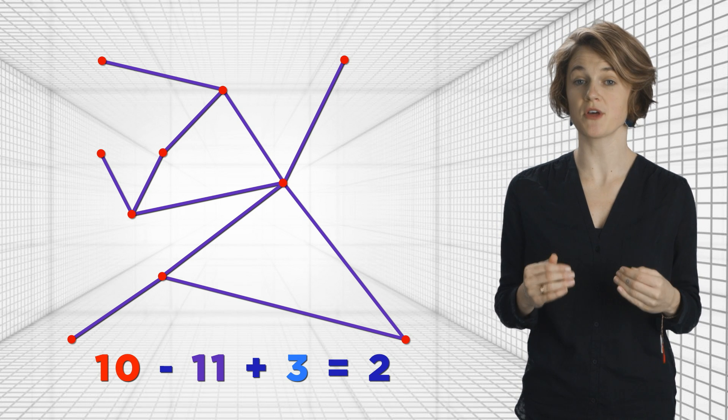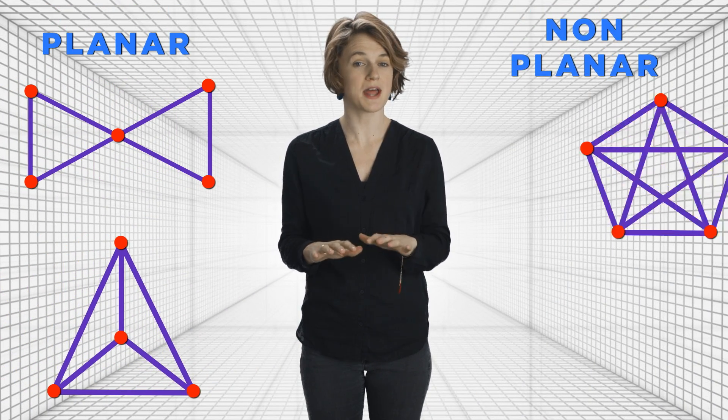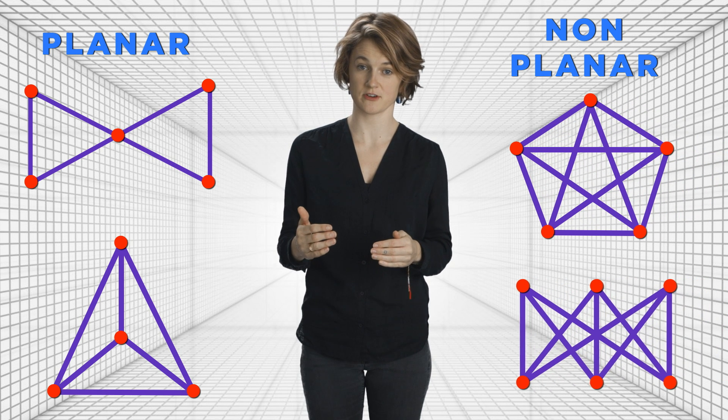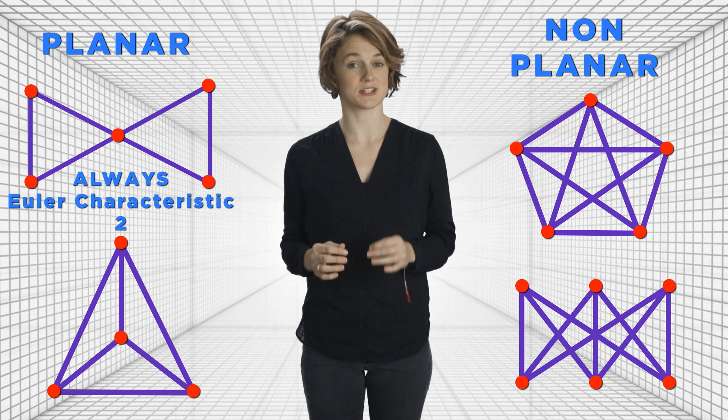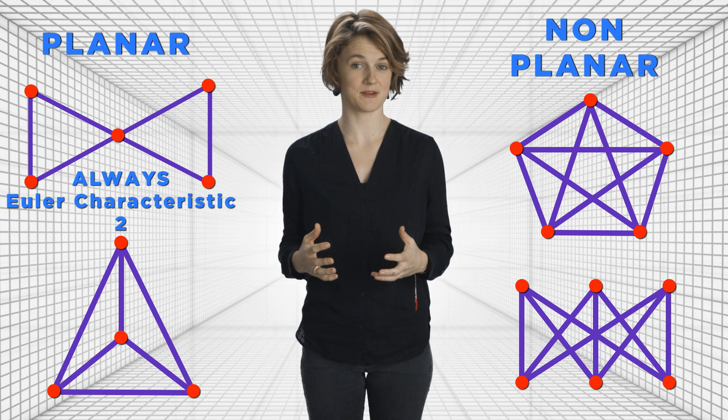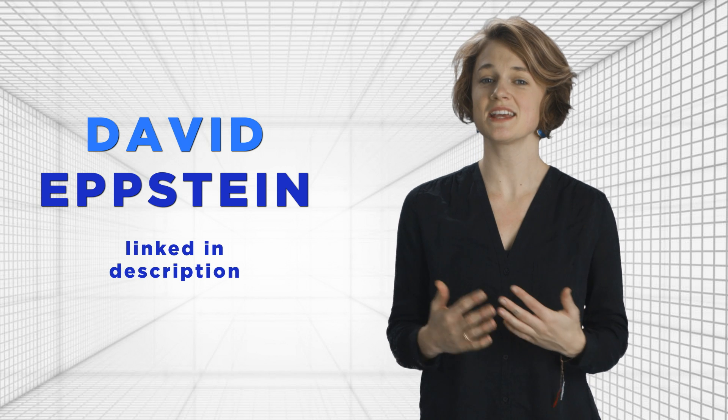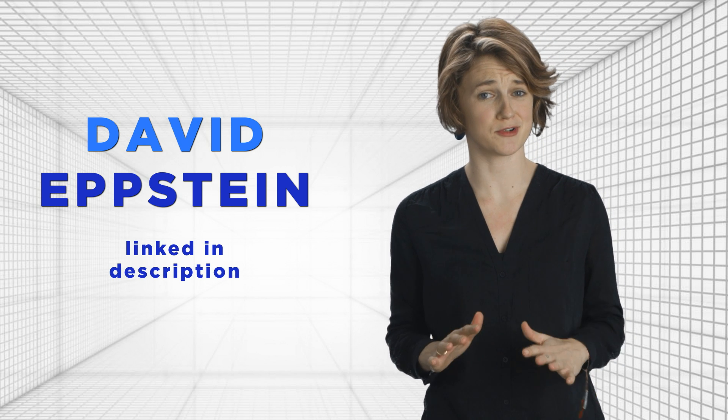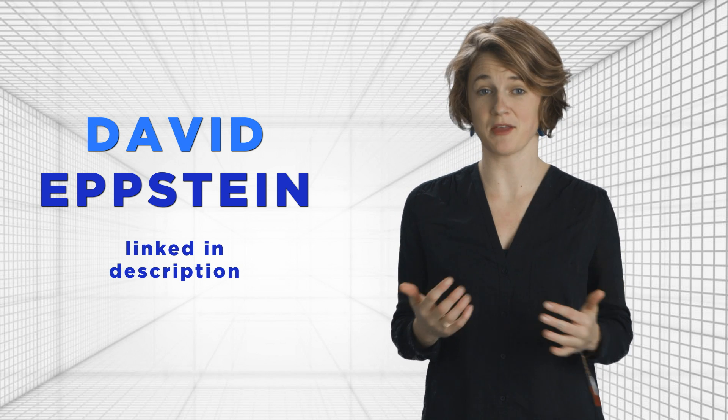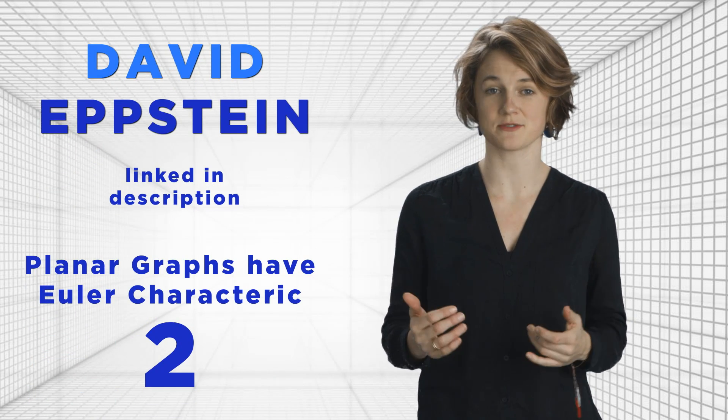It's no coincidence that they both have Euler characteristic two. In fact, any planar graph, which means that you can draw the graph on a piece of paper without having the edges cross over each other, will have Euler characteristic two. Right now, we'll prove that fact. It'll help us later with Pick's theorem. David Epstein's website, linked in the description, contains an impressive 20 different proofs, using all kinds of different mathematical tools, of the fact that a planar graph has Euler characteristic two.